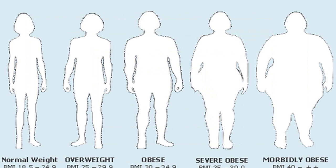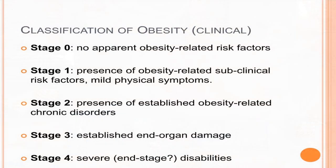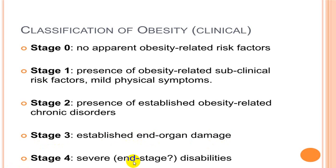Using the BMI chart, we classify patients as normal weight, overweight, obese, severe obesity, and morbid obesity — with starvation at the extreme lower end. In staging: stage 0 has no apparent obesity-related risk factors; stage 1 has subclinical risk factors and mild physical symptoms; stage 2 has chronic disorders; stage 3 has established end-organ damage; and stage 4 has end-stage severe disability.